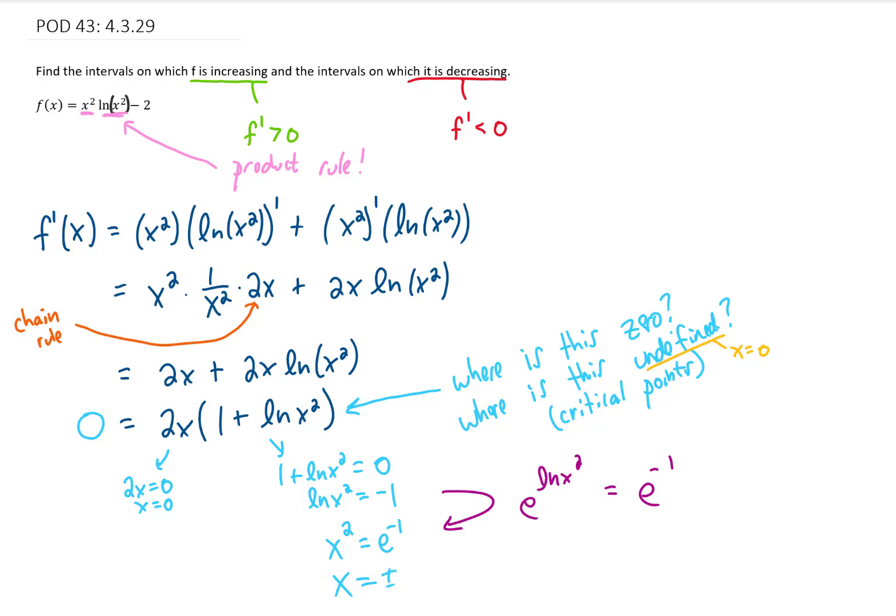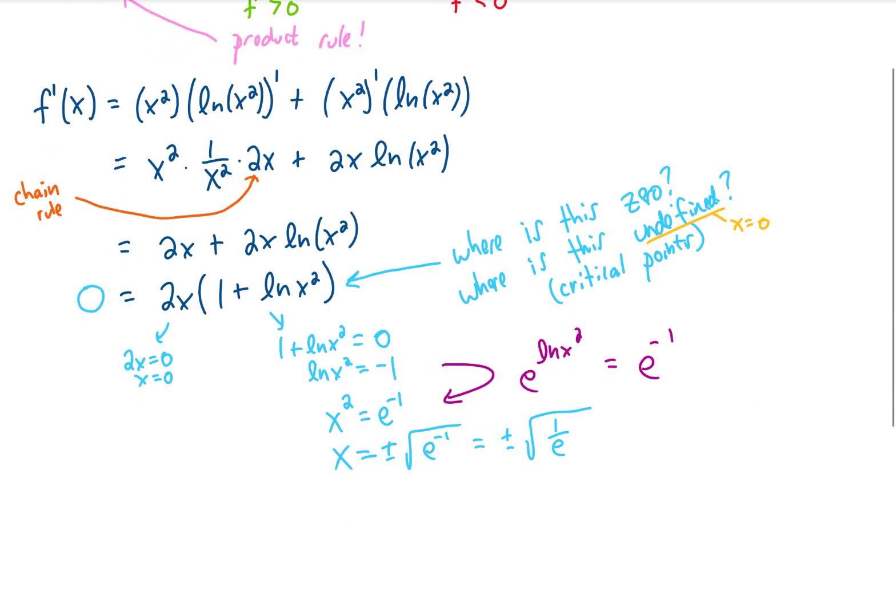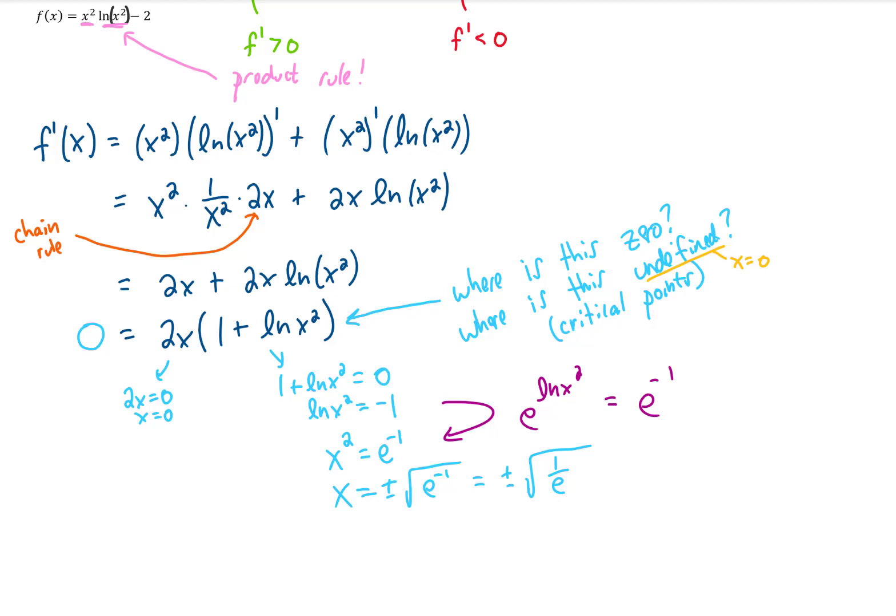Don't forget that we need a plus or a minus when we take a square root of both sides of an equation. And if it helps, you can think of e to the negative 1 power as 1 over e. But either way, we have now found three critical points for our function.